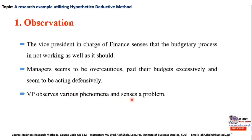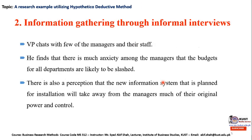The vice president observes various phenomena: there is a problem with middle managers who are padding or exaggerating their budgets because they are aware of the vice president's decision to cut down departmental budget requirements. In the second step, the vice president chats with a few managers and their staff regarding their anxiety about the budget cut decision, and finds that there is much anxiety among managers that budgets for all departments are likely to be slashed.